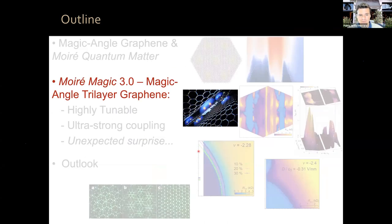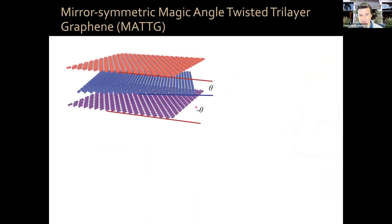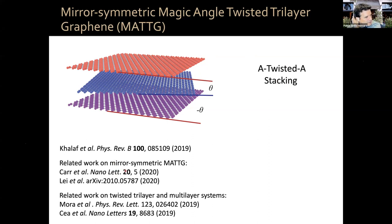Now let me tell you about Moiré Magic 3.0. The system I want to talk about is mirror symmetric magic angle twisted trilayer graphene. It's three layers of graphene: from the bottom, one layer; the second layer rotated by angle −θ; and another layer on top rotated back by angle +θ, which means the bottom and top layers are exactly aligned — a configuration called ATA stacking. This structure was proposed by the Bistritzer group, by Islam Khalaf. A lot of work has now been done on this system; there are by now quite a few dozen papers about it.